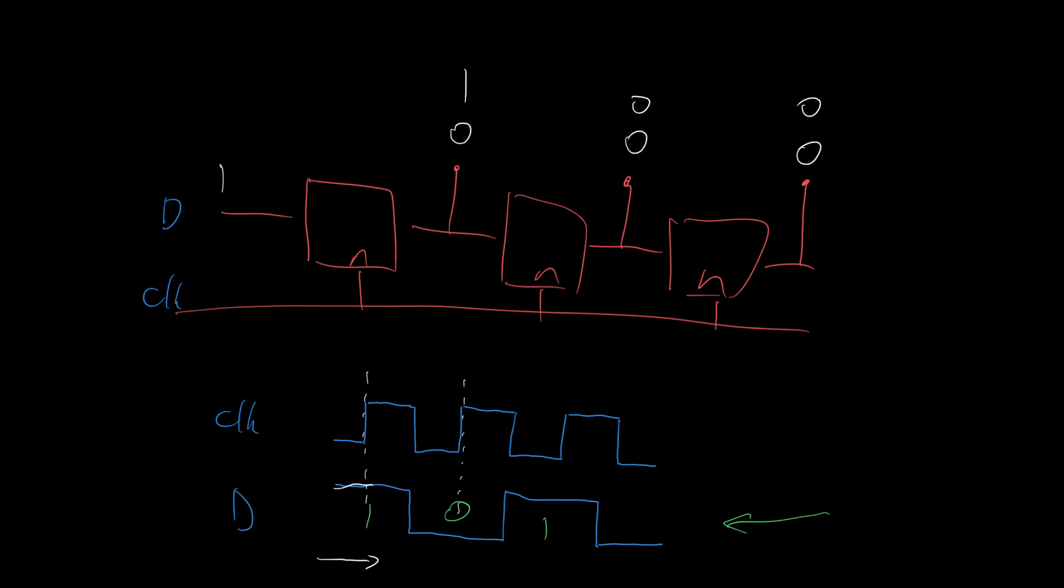At the next rising edge of the clock, we have that D is 0. And so at the rising edge of the clock, everything gets shifted across 1. The 0 that was here gets shifted across to there. The 1 that was here gets shifted across to here. And the 0 coming in at the input here gets shifted across to here.